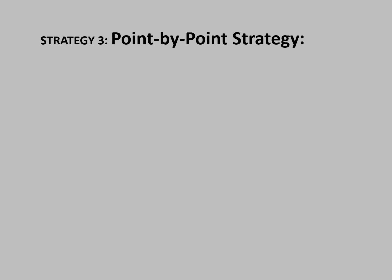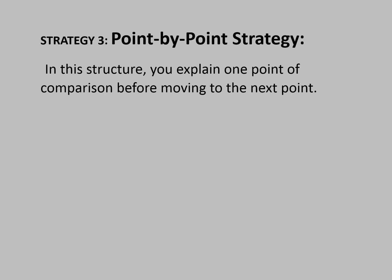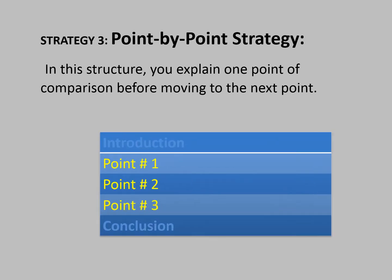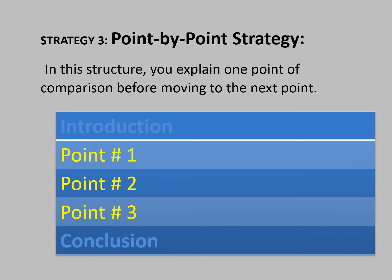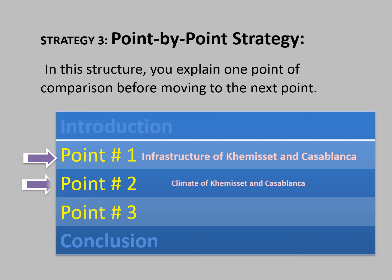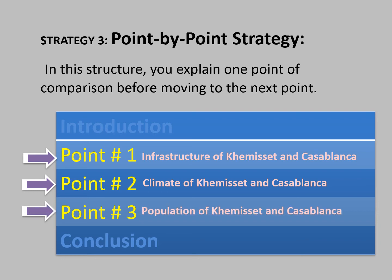The last strategy is the point-by-point strategy. In this structure, you explain one point of comparison before you move to the next point — you go point by point. Using Chmisat and Casablanca: you write your introduction, then talk about point one, for example infrastructure in both cities. Then in the next paragraph you talk about the climate of both cities. Then you move to point three, for example the population, before you write your conclusion. Remember: one idea per paragraph — don't include more than one idea in a paragraph.